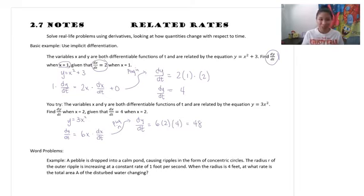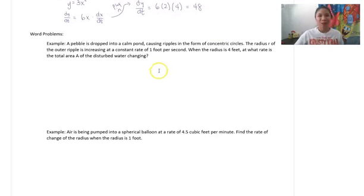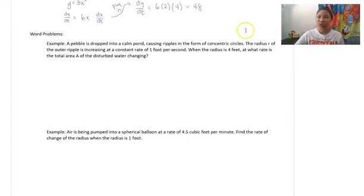Those were the basic examples. Now we go into the real stuff — word problems where they're not going to give us the equation anymore; we have to write it ourselves. First example: a pebble is dropped into a calm pond, causing ripples in the form of concentric circles. The radius r of the outer ripple is increasing at a constant rate of 1 foot per second. When the radius is 4 feet, at what rate is the total area A of the disturbed water changing?